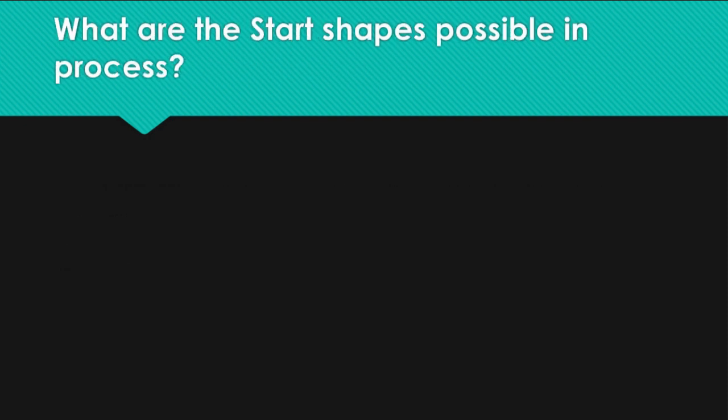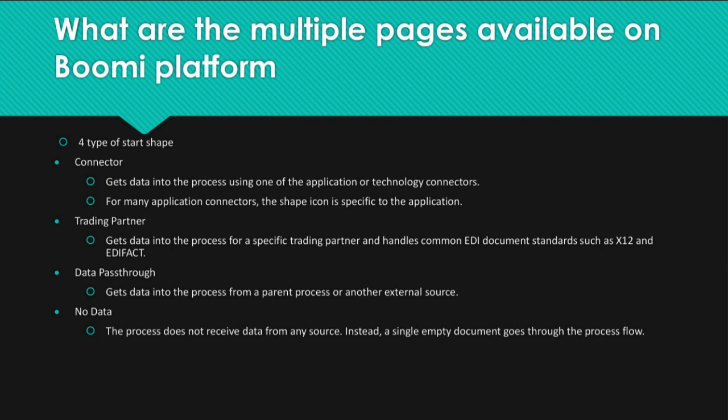Question: What are the start shapes possible in a process? Answer: There are 4 types of start shapes.